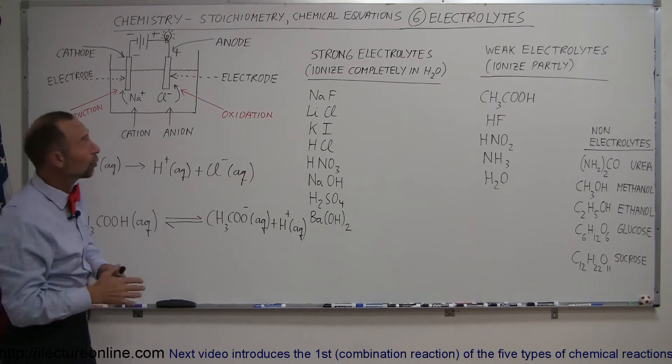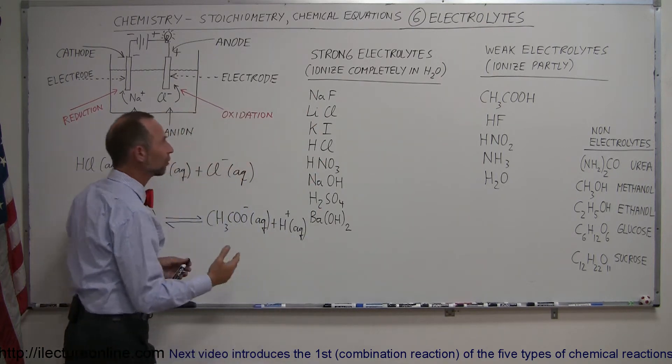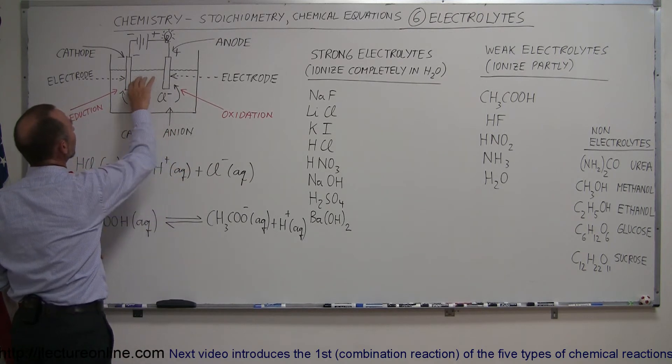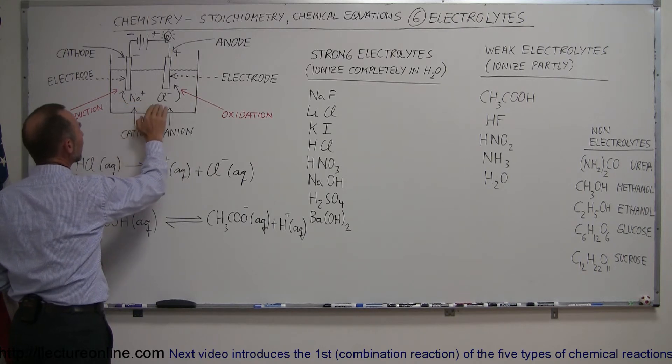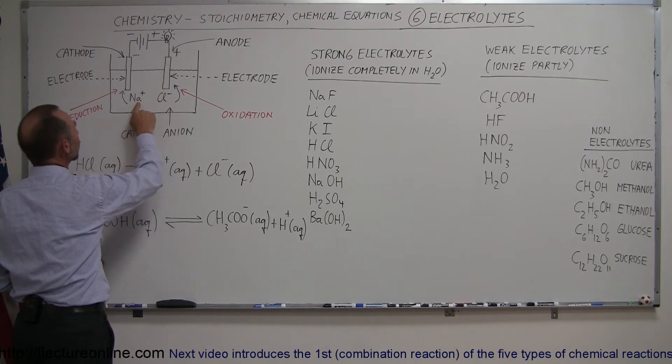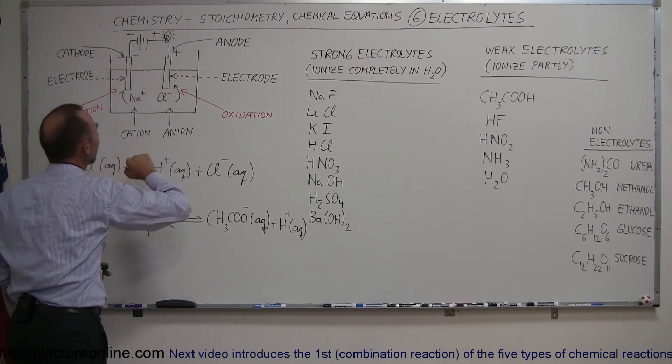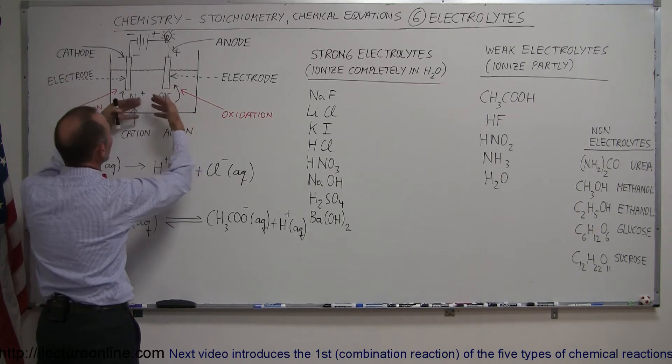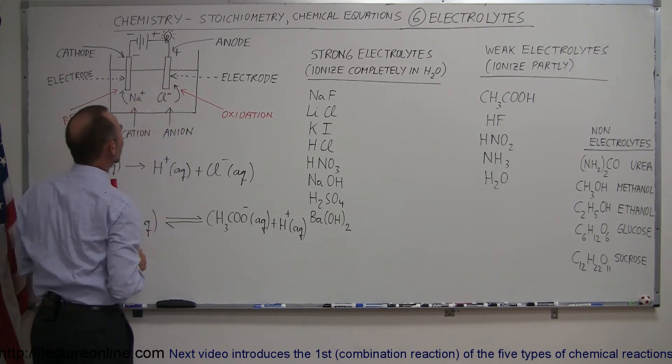If you put, for example, sodium chloride, which is also a strong electrolyte, when we put it in water, the sodium chloride splits up into sodium ions and chlorine ions. The sodium ions are attracted to the negative electrode and the chlorine atoms are attracted to the positive electrode, so they travel in the liquid. Sodium ions travel this way, chlorine atoms travel this way.